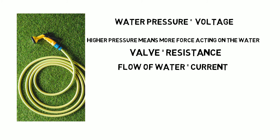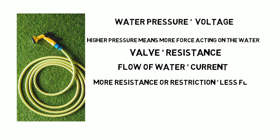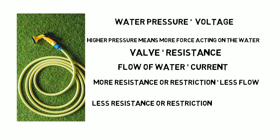All three of these properties are linked. If we increase the resistance or close the outlet valve off then the flow is reduced. If we open the valve up or decrease the resistance then the flow increases.